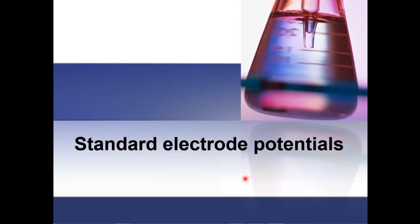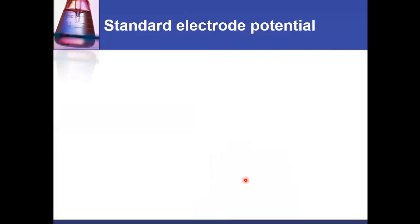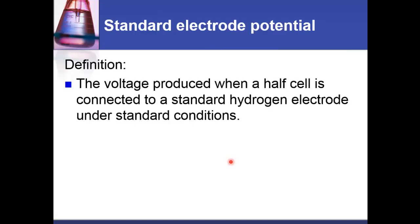Let's look at standard electrode potentials. The definition for standard electrode potential is the voltage produced by a half cell when it's connected to a standard hydrogen electrode under standard conditions.